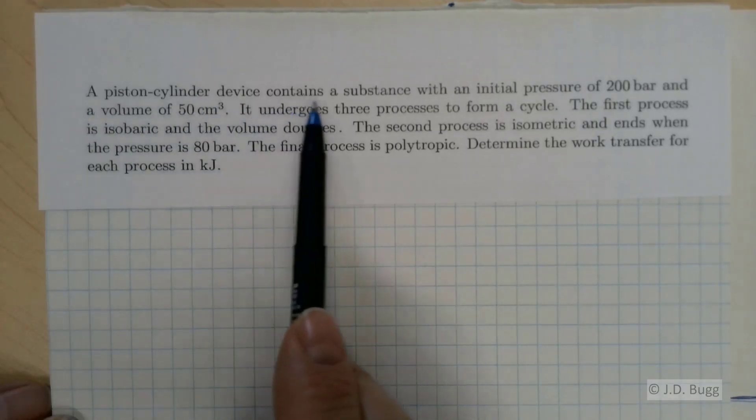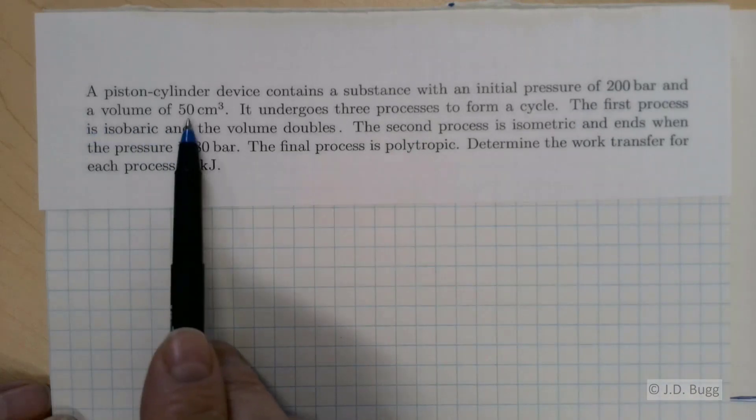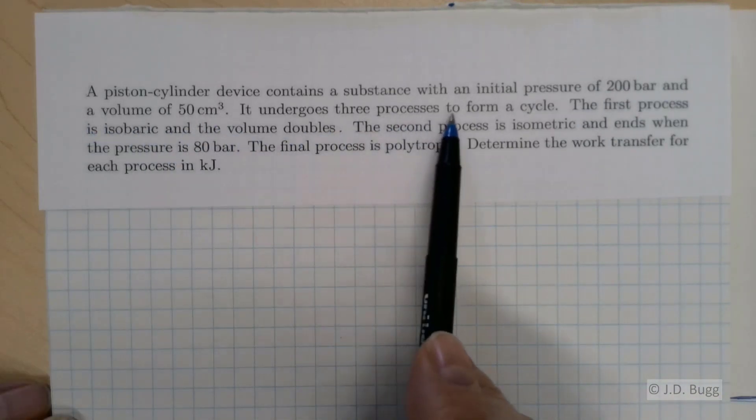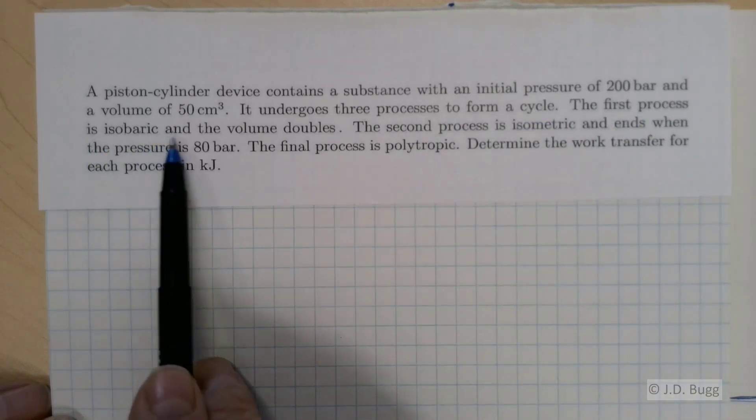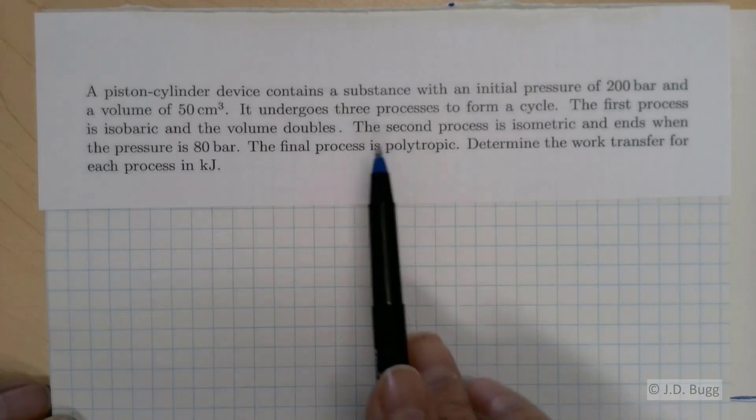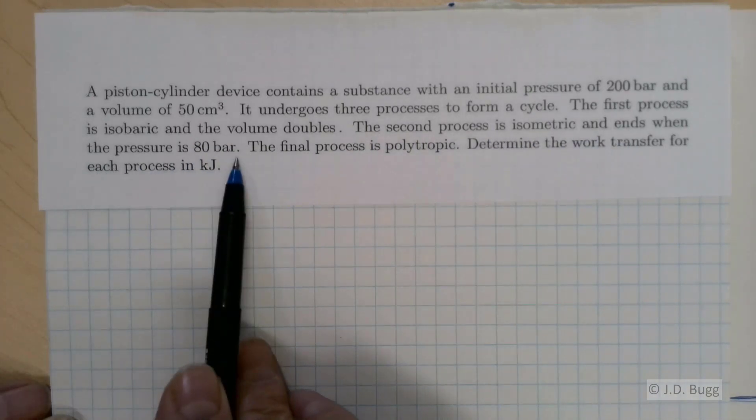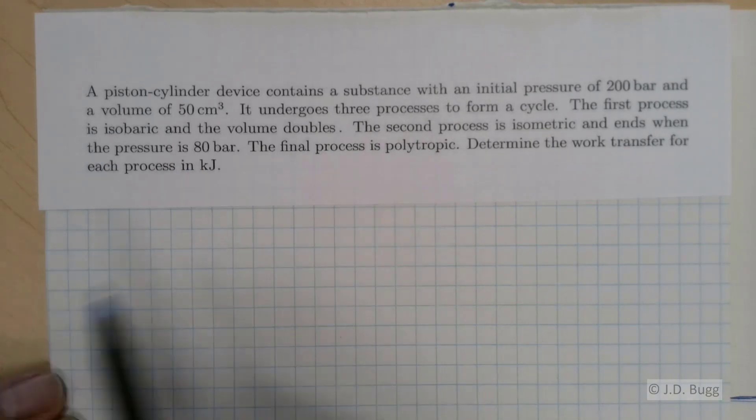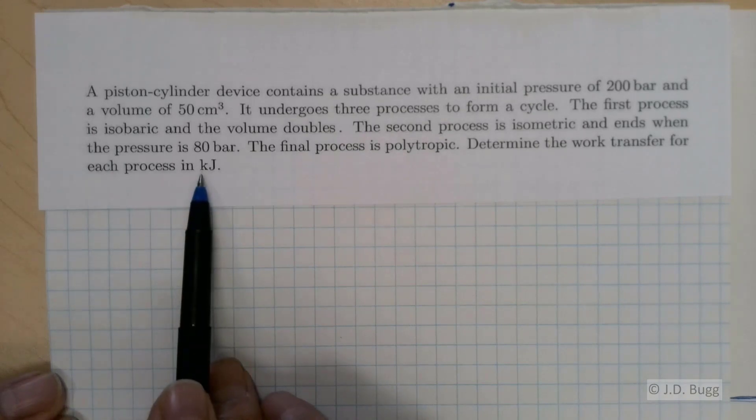A piston-cylinder device contains a substance with an initial pressure of 200 bar and a volume of 50 centimeters cubed. It undergoes three processes to form a cycle. The first process is isobaric and the volume doubles. The second process is isometric and ends when the pressure is 80 bar. The final process is polytropic. Determine the work transfer for each process in kilojoules.